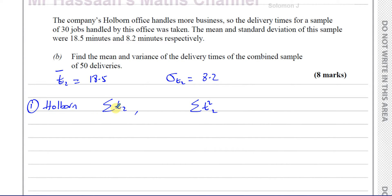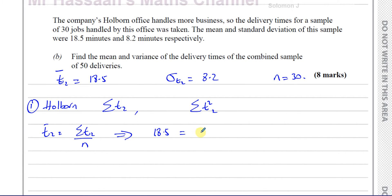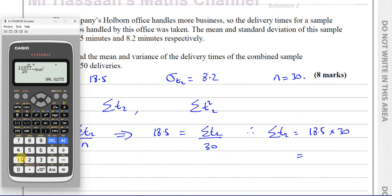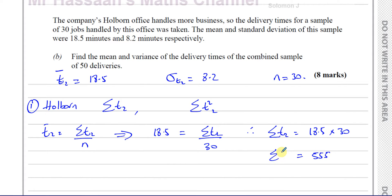The number of entries here is 30. We know that the mean equals the total sum of all entries divided by the number of entries. The mean is 18.5, equal to the total sum divided by 30. Therefore, the sum of all times for the second office is 18.5 multiplied by 30, which gives us 555. So that's the sum of all the times for the second office.